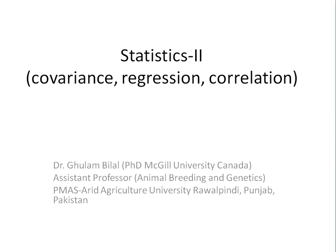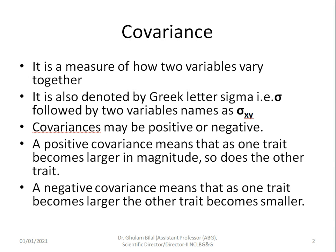Covariance becomes important when we are interested in studying more than one variable in a population. It is a measure of how two variables vary together. We denote it by the Greek letter sigma, written as σxy, because two variables are involved. If it's only x, that is standard deviation, but if it's x and y, then it is covariance between x and y.